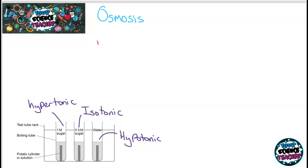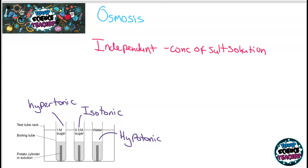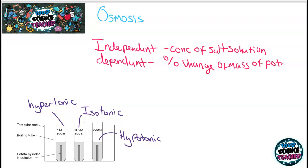In this practical, the independent variable — what I'm changing — is the concentration of the salt solution. The dependent variable I'm measuring is the percentage change by mass of the potato chips. It's important to remember this doesn't have to be potato; it could be another vegetable or a piece of agar jelly. Don't be thrown by what they put in the solution — examiners sometimes modify practicals a little bit to try and throw you.